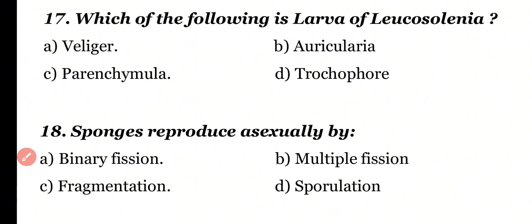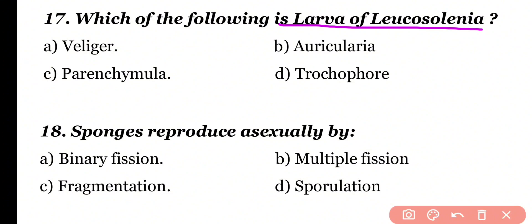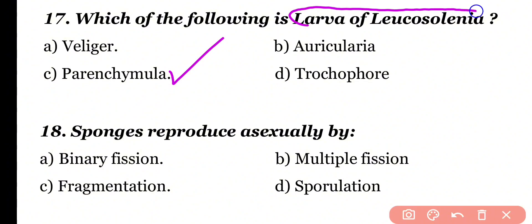Question number 17. Which of the following is the larva of leucosolenia: veliger, auricularia, parenchymula, or trochophore? Correct answer is option C. Parenchymula larva is the larva of leucosolenia sponge, which belongs to class calcarea.